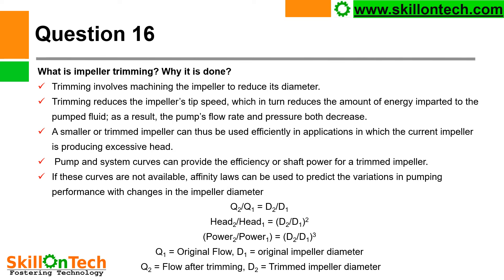As per affinity law: Q2/Q1 = D2/D1; H2/H1 = (D2/D1)²; P2/P1 = (D2/D1)³. Where Q1 = original flow, D1 = original impeller diameter, Q2 = flow after trimming, D2 = trimmed impeller diameter.